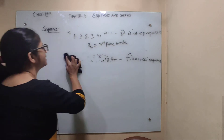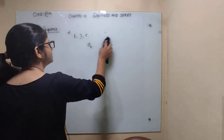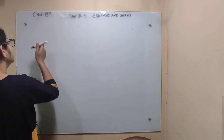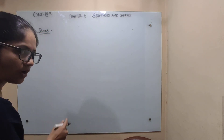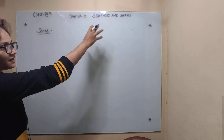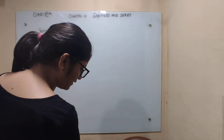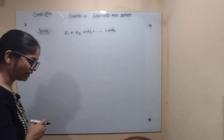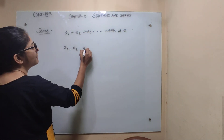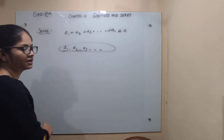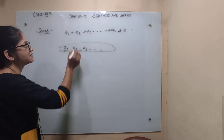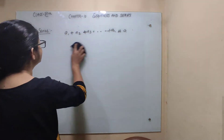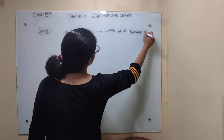Now let's understand what a series is. If the terms of a sequence are connected by a plus sign, then it is called a series. For example: a_1 plus a_2 plus a_3 plus ... plus a_n. Previously the terms were separated by commas in a sequence, but when connected by plus signs, it becomes a series of n terms.